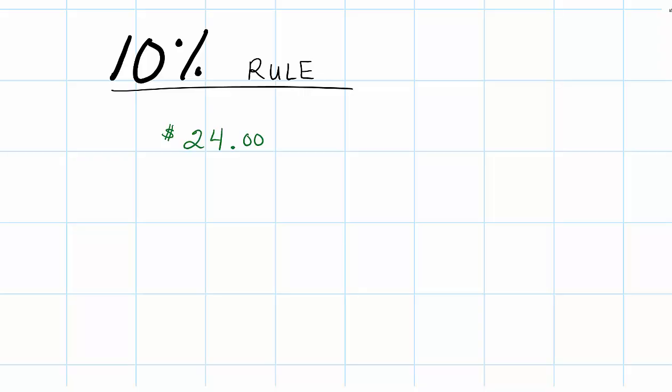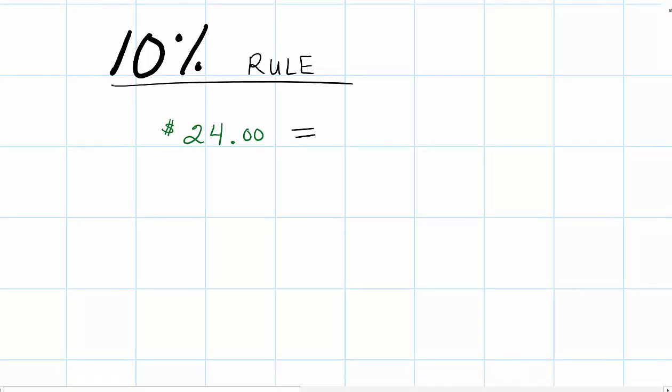First thing we have to understand is what do we have 100% of? What's all of our money? In this case, I've given you the number $24. $24 is 100% of our money.